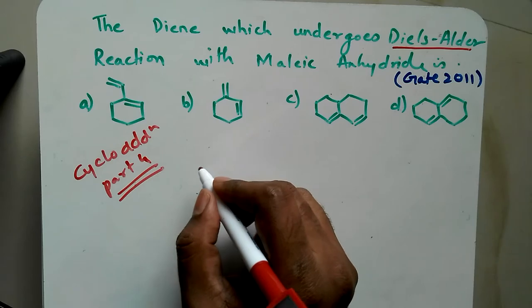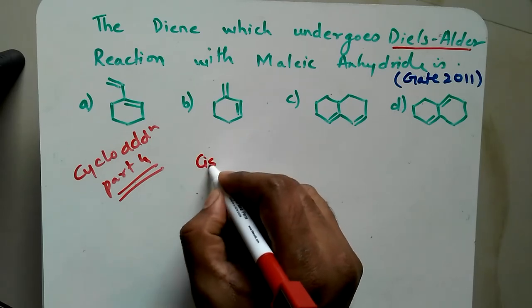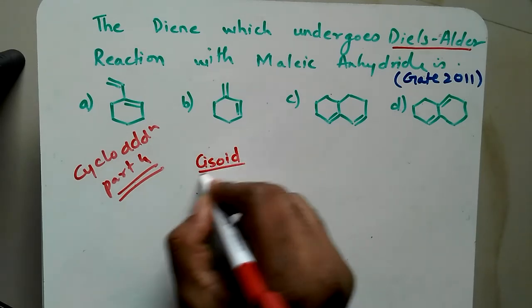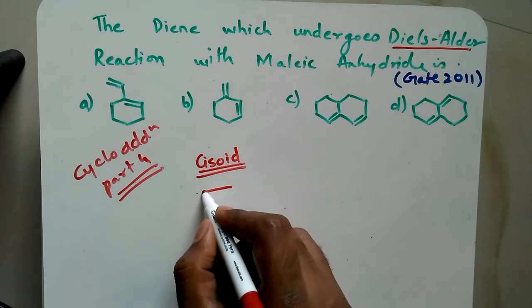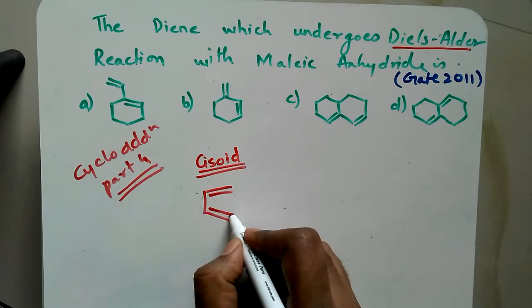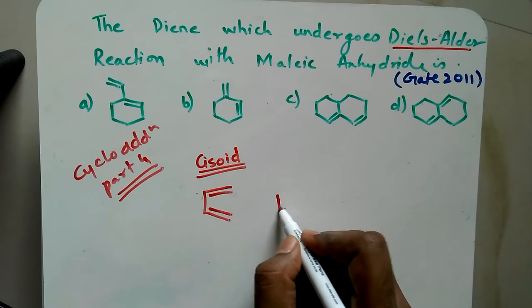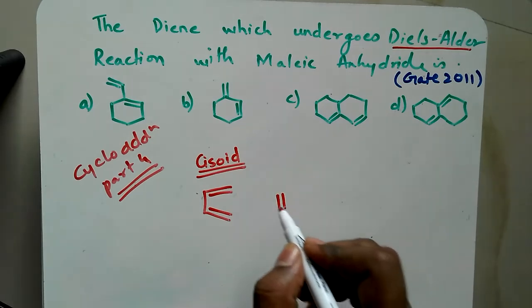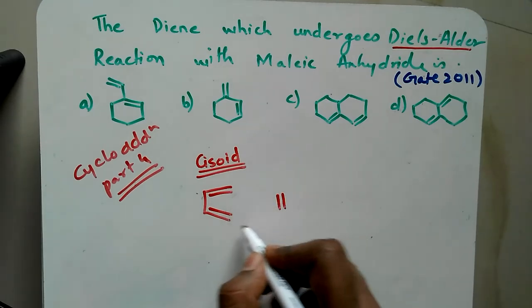The diene which is in s-cis or cisoid condition will undergo the reaction. Cisoid means it should be fixed in this way, so that the dienophile, the incoming dienophile, the reaction will be done with ease. It is very important it should be in cisoid condition.